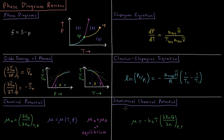Chemical potential can be measured using statistical mechanics, where its value is equal to the negative Boltzmann constant times temperature times the partial derivative of the natural log of the partition function with respect to the number of moles of that given phase.